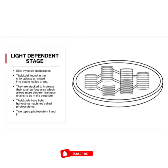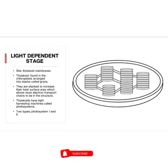In the thylakoids we have photosystems, and the photosystems are the light-harvesting machines. We have photosystem 1 and photosystem 2. Photosystem 1 accepts light at 700 nanometers and is located in the outer thylakoid membrane. Photosystem 2 accepts light at 680 nanometers and is located in the inner thylakoid membrane.